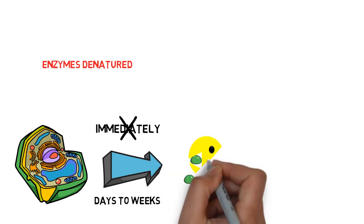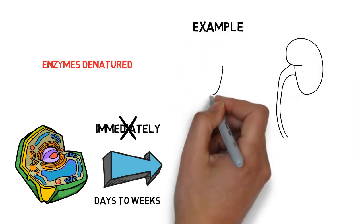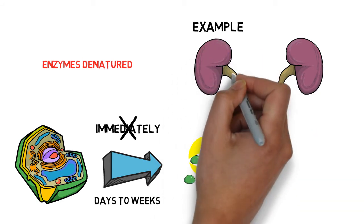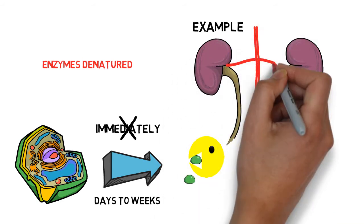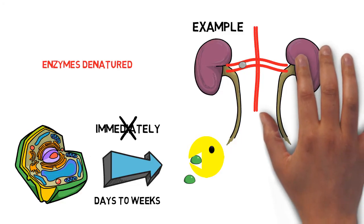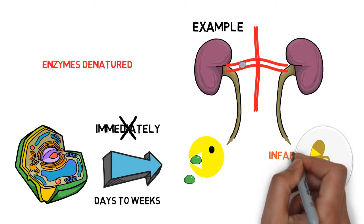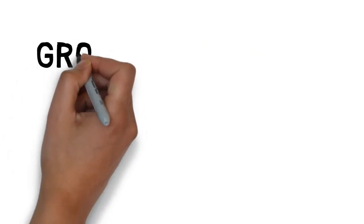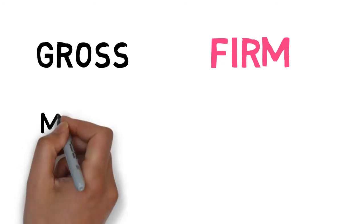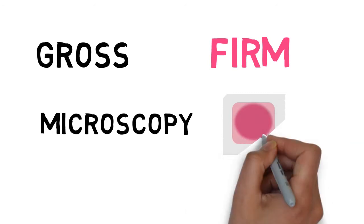The dead cell components are removed by leukocyte lysosomal enzymes. For example, in ischemia of any organ due to obstruction of vessels supplying that area. If coagulative necrosis is localized, that area is called an area of infarct. Grossly it is firm and the architecture is maintained, while microscopically you can see preserved cell outlines but there is loss of nuclei.